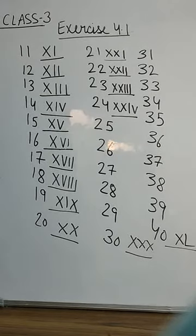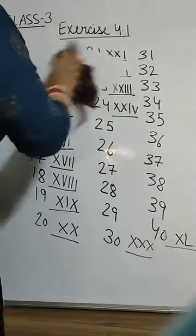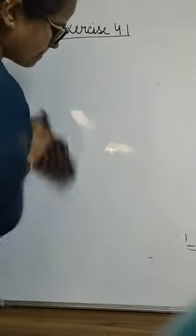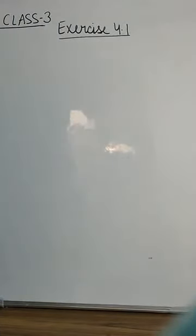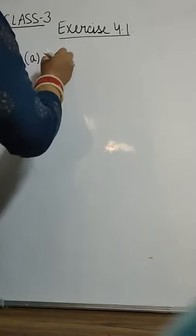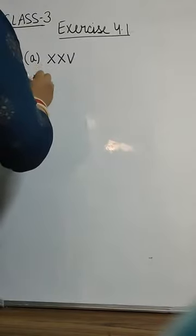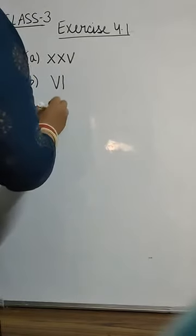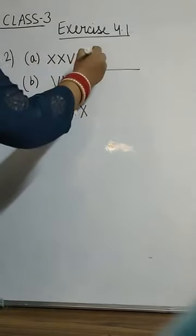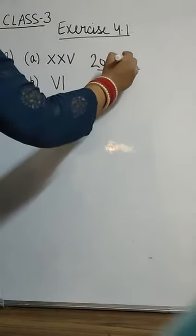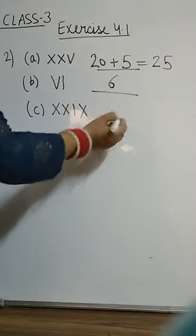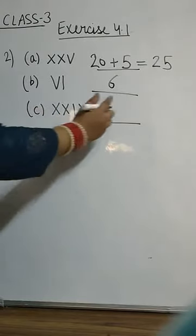So now we are coming to the next question. XXX means 10 and 20, V means 5. That is 25. Everyone know what is VI? That is 5 plus 1 will be 6. Again, this is 20 plus 9. That is 29.